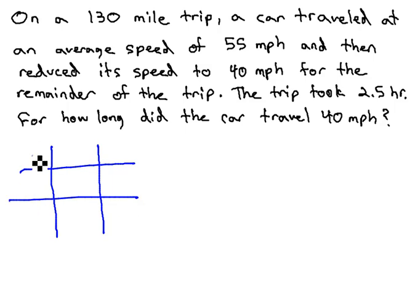Setting up our table where rate times time equals distance, we see that the car traveled the first leg, we'll call it leg A, and then slowed down for the second leg, which we don't know if it was shorter or longer. We'll call that leg B. What we do know is that the entire trip was 130 miles. Let's see if we can plug all of our information in the table.